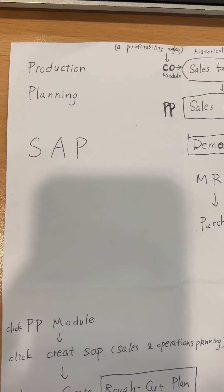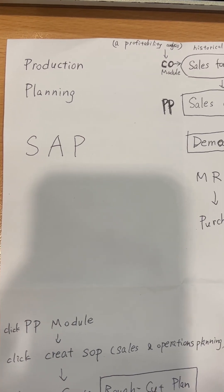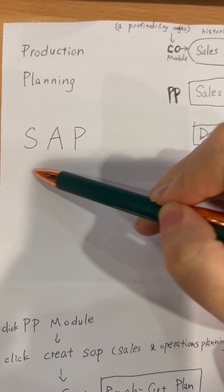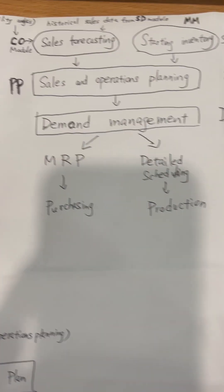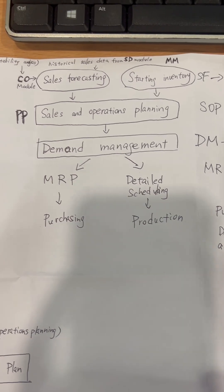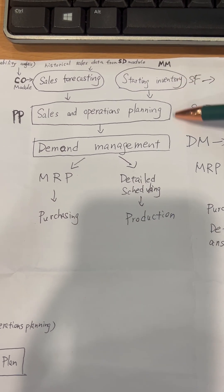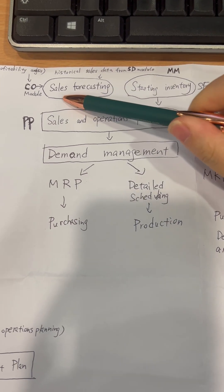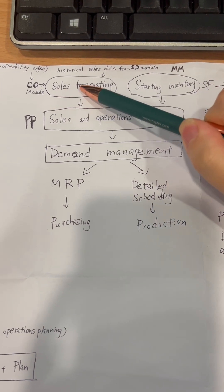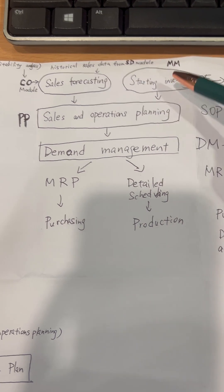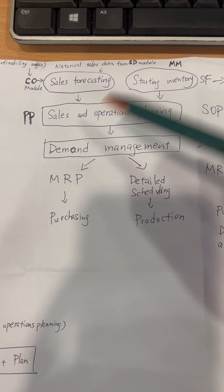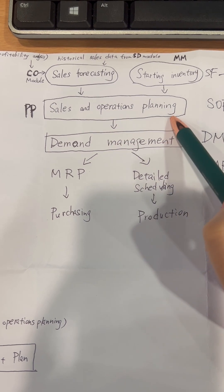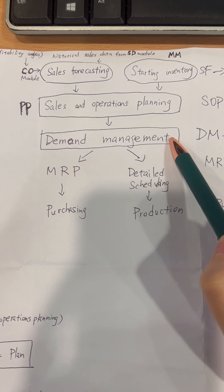In this video I'm going to introduce the Production Planning module in SAP. Let's look at the framework of the PP module. Starting from sales forecasting and starting inventory, we then have Sales and Operations Planning and Demand Management.